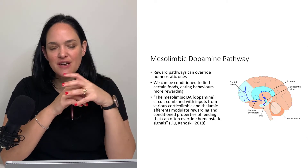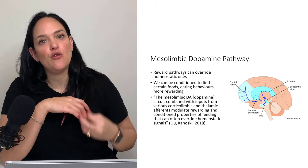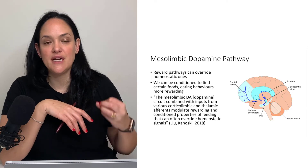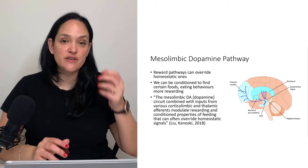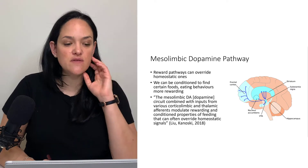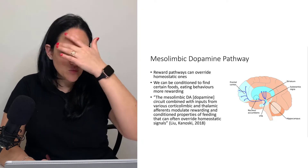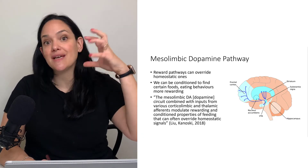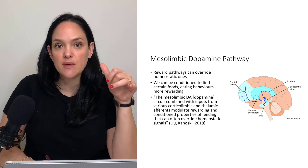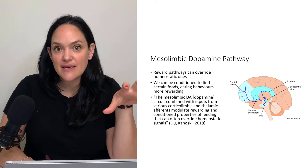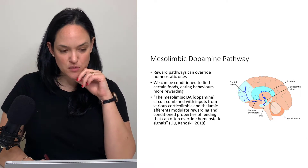As we learned in the last section, non-homeostatic appetite can override homeostatic appetite to promote higher levels of feeding, especially in individuals with obesity, but not just in individuals with obesity. We talked about the prefrontal cortex and its role in executive function and how that can be compromised, and also the hippocampus and how that can affect feeding behavior and be compromised in individuals with obesity.